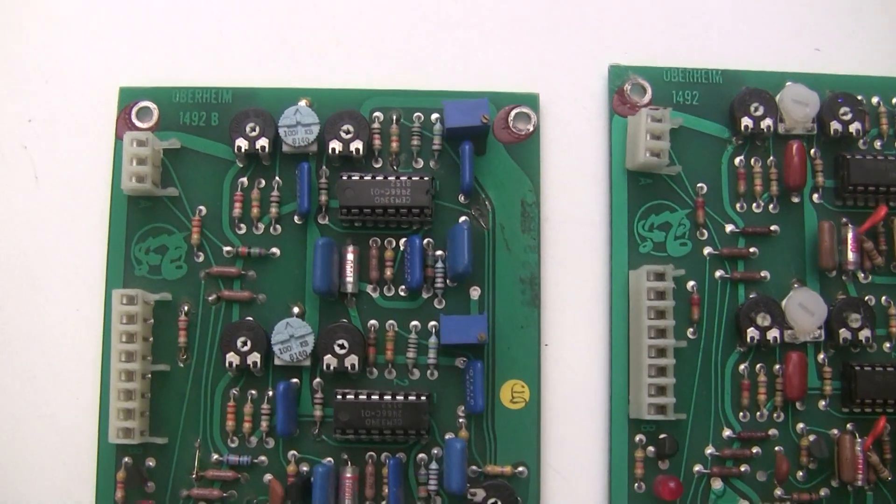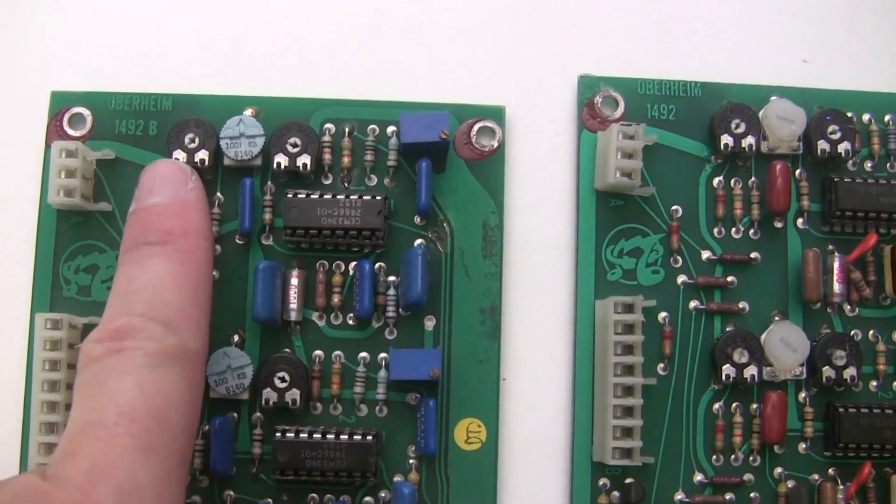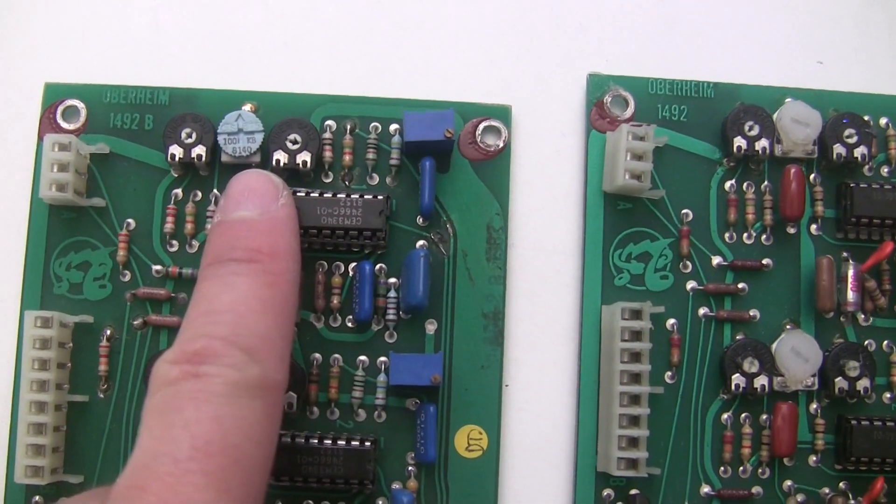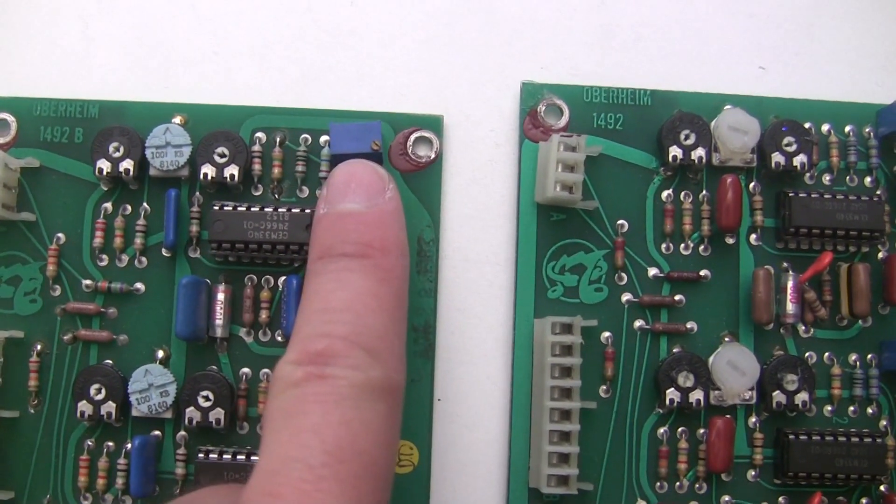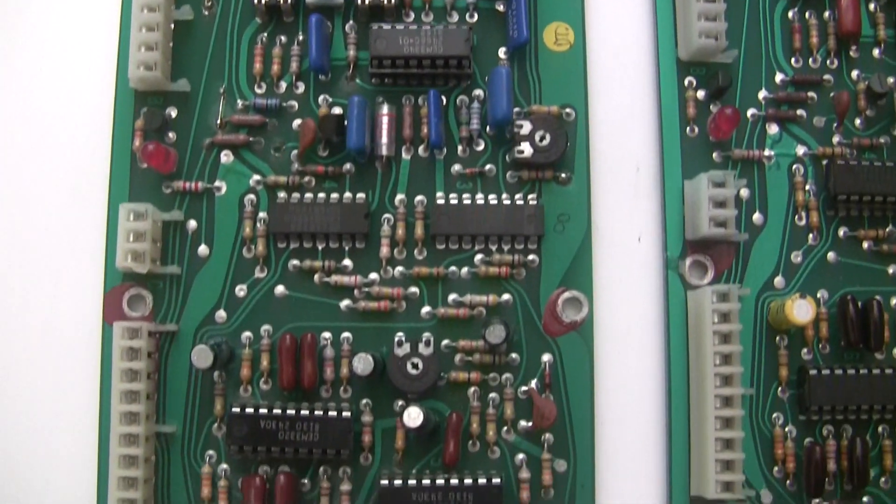Taking a look at the voice cards, this is what a typical one looks like. It's got a combination of black trimmers that look like this one, white and blue trimmers that look like this one, and some multi-turn trimmers that look like this. So this is a pretty typical voice card.